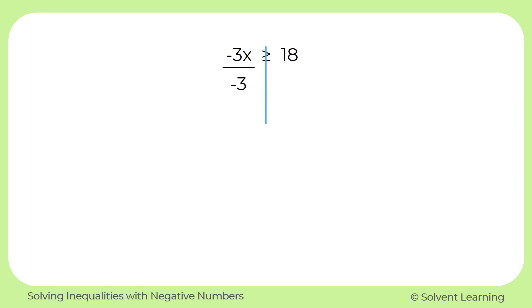So we'll do the opposite, which is divide by negative 3. And whatever we do to that side, we have to do to the right side as well.